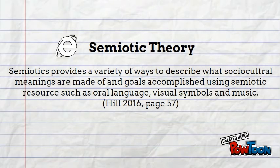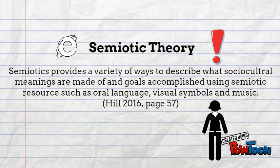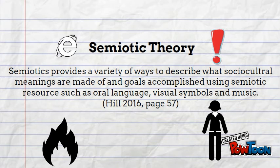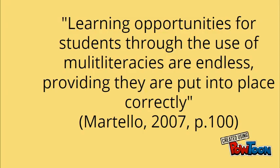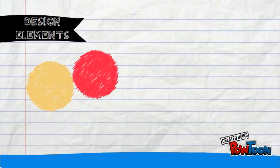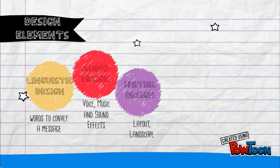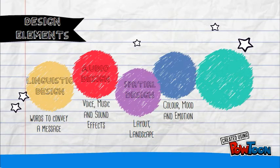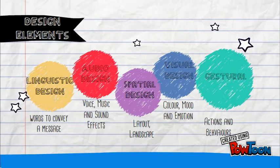The semiotic theory is the theory and study of signs and symbols. There are five main design elements: linguistic design, audio design, spatial design, visual design, and gestural.